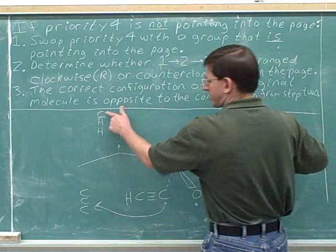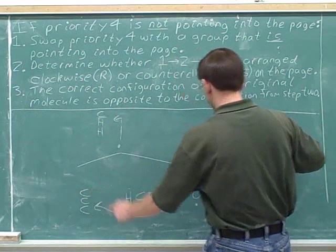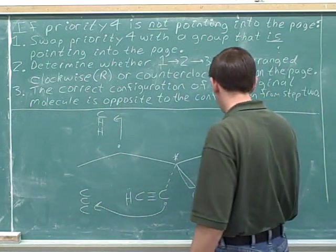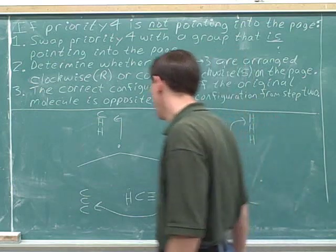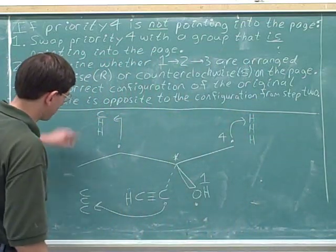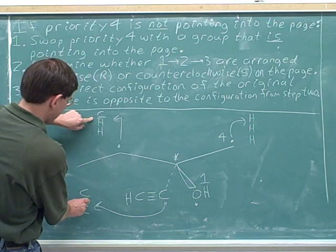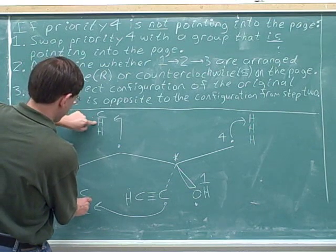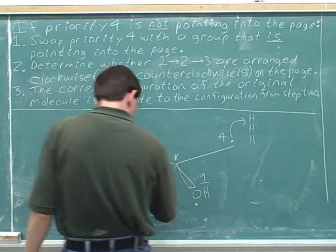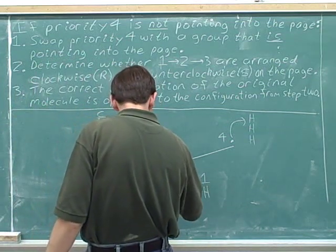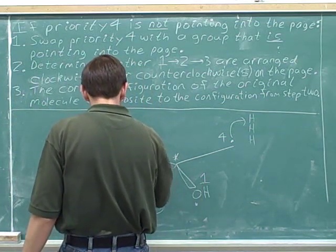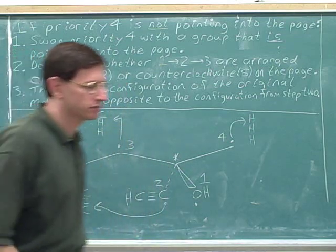This hydrogen here is inferior to this carbon and this carbon, so this is going to be our number four priority. And then the first point of difference between this list and this list is at the second atom. This carbon beats this hydrogen. So down here on the dash we have the number two priority, and here we have the number three priority.